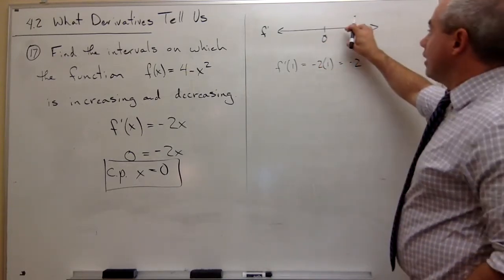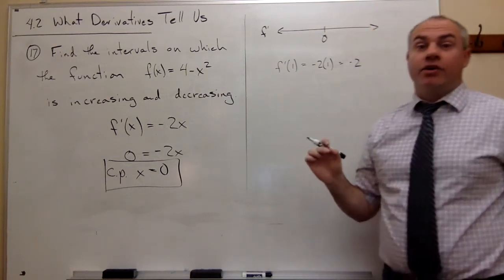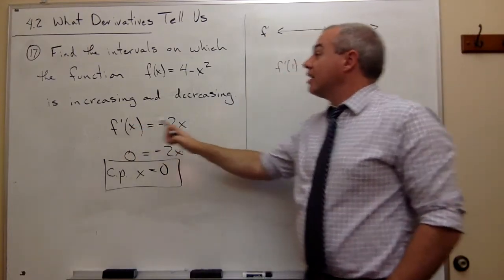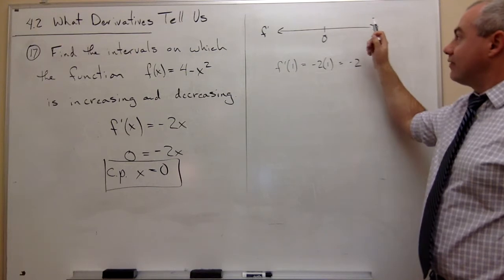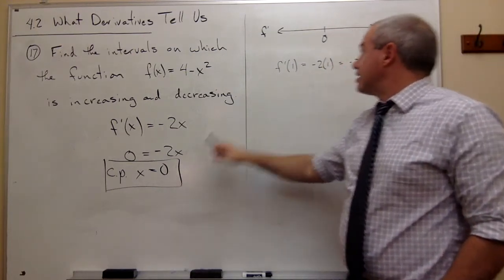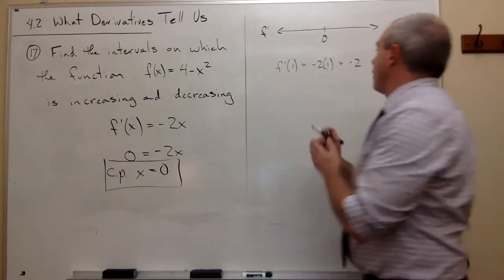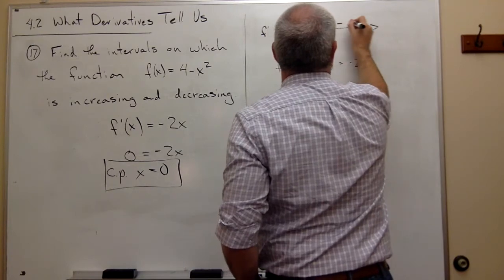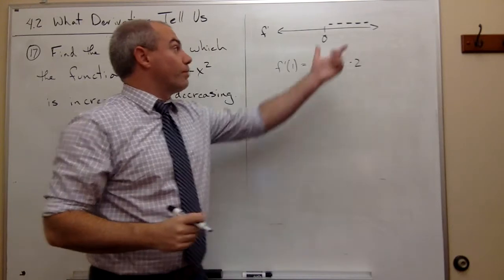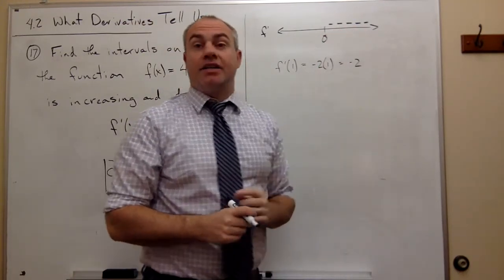Now, if I plug in 1 and I get a negative value, then if I plug in 2, I'd also get a negative value. Why is that? Because f' is continuous, and so it can't become positive without crossing through 0 somewhere. And I know that the only place that it's 0 is at 0. So all the things over here are negative. So I'm going to write in negatives above that region to remind myself that if I plugged in any value over here, I'd get a negative value.